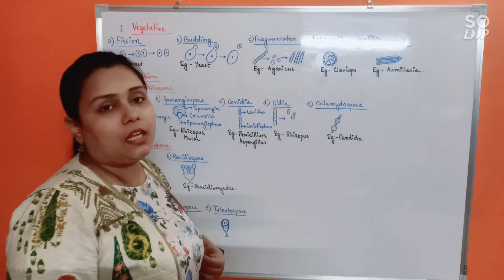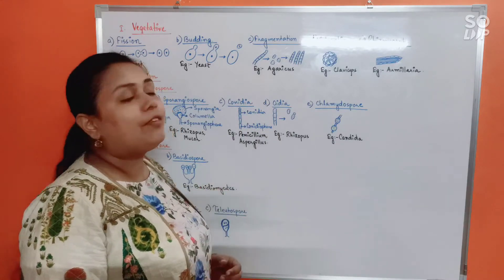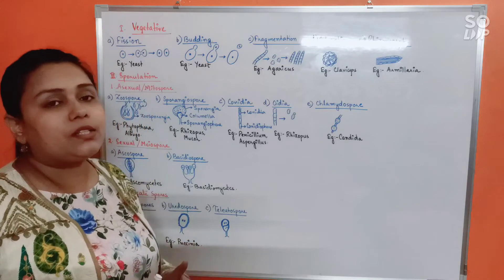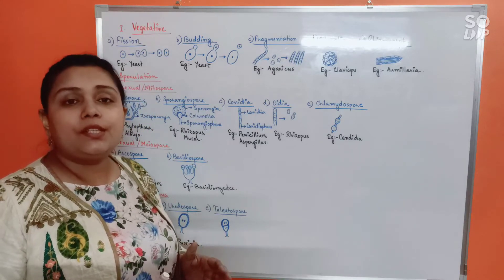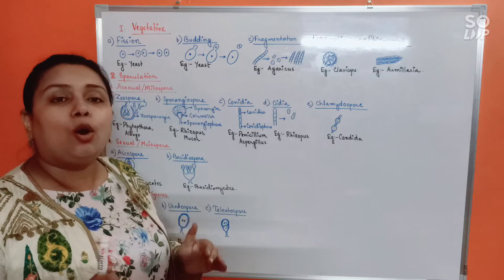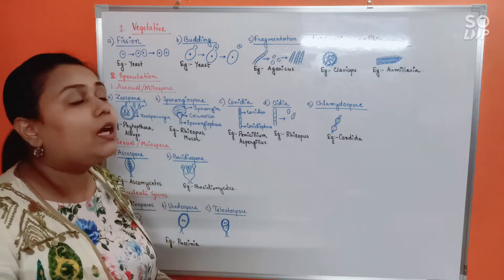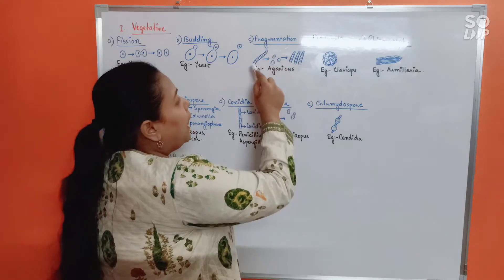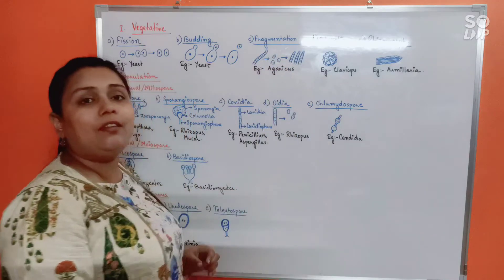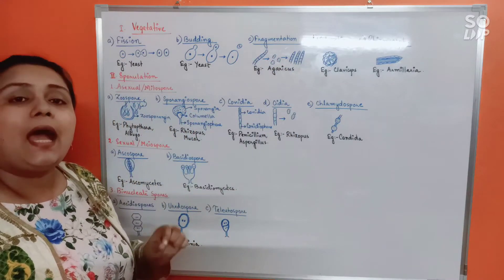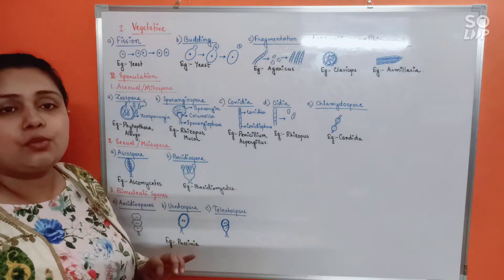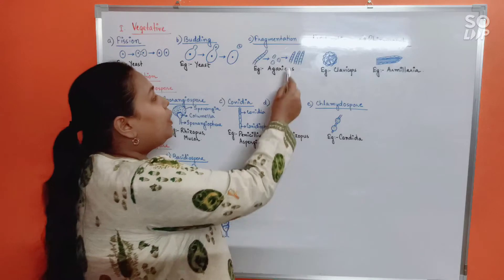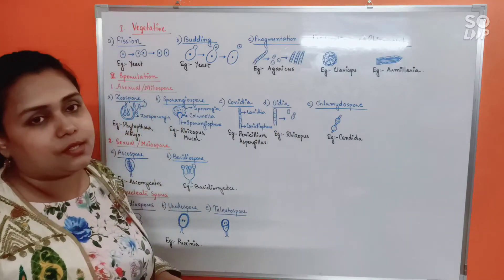Next is fragmentation. Fragmentation occurs in multicellular fungi which bear fungal hyphae or fungal filaments. It is a simple process: the fungal hyphae break down into several fragments or pieces, and each piece gives rise to a new individual or new hyphae. This is commonly seen in Agaricus.